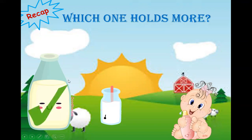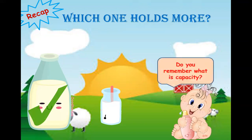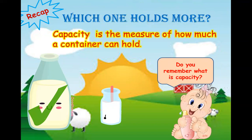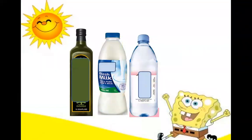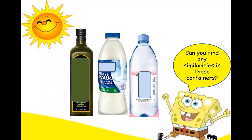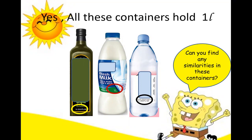Yes, bottle A. Do you remember what capacity is? Capacity is the measure of how much a container can hold. Now can you find any similarities in these containers? Look at the three containers — yes, all three containers hold one liter. You can see it there — circle one liter in all three containers.